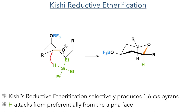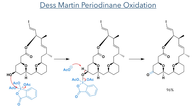We can explain this selectivity by looking at the conformation of the oxocarbenium formed during the reaction. The hydride preferentially adds to the alpha face of the molecule, producing the 1,6-cis-pyran, as attack from the top face is disfavoured due to steric hindrance. The remaining alcohol was then oxidised in a 96% yield using Dess-Martin periodinane.